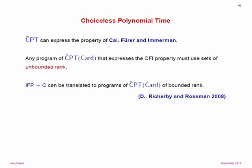This is a proper extension of fixed-point logic, but still counter to counting. We can add counting to choiceless polynomial time, giving CPT with counting — yet another proposal for a logic for P-time that properly extends fixed-point with counting. It can express the Cypher-Ehrmann property of graphs. But we know that any program expressing that CFI property must use sets of unbounded rank, meaning no finite nesting of sets will do. These all appear in a paper with Dave Richerby and Ben Rossman.